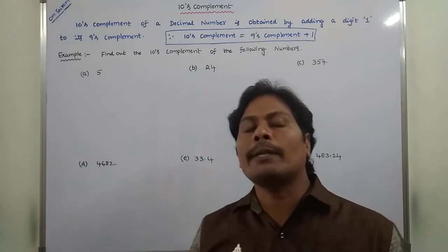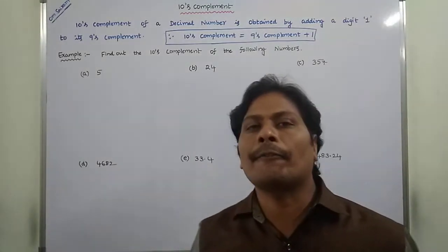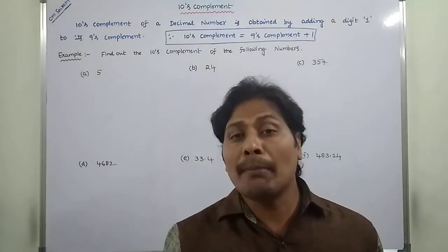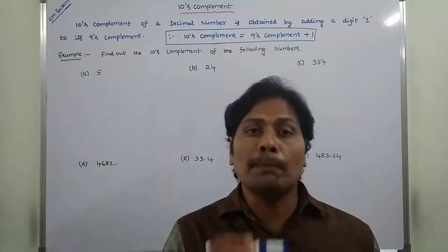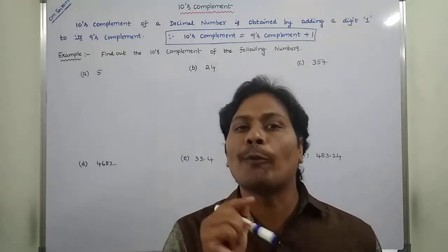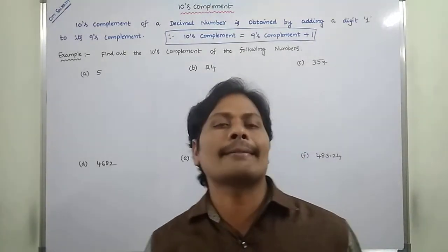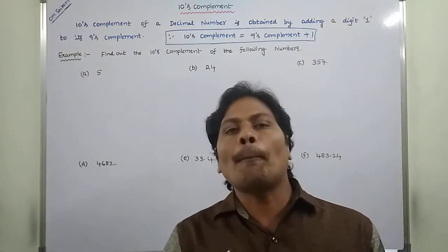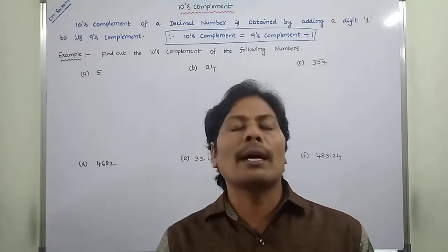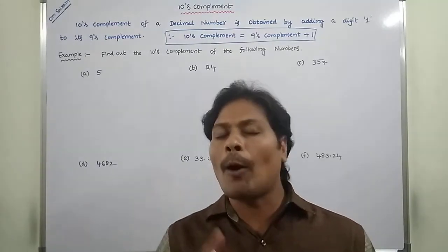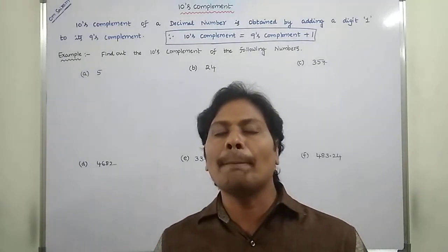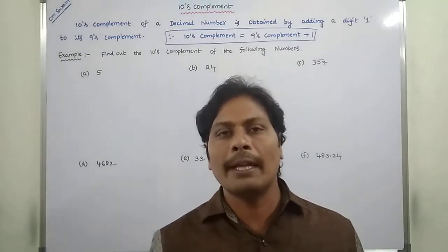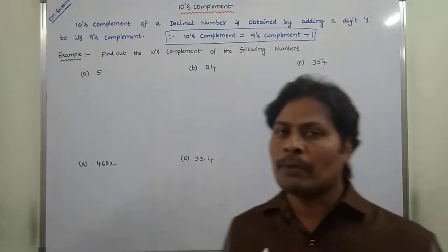How to find out the 10's complement of a given number? The 10's complement of a given decimal number is obtained by adding one to its 9's complement. Hence we can say that the 10's complement of a decimal number is equal to the 9's complement of that decimal number plus one.